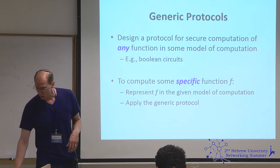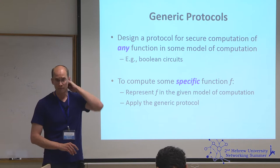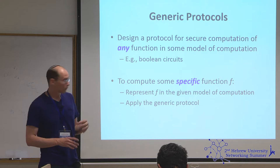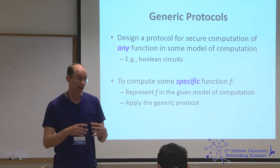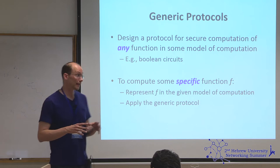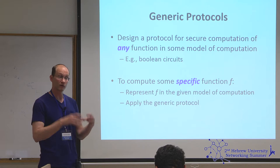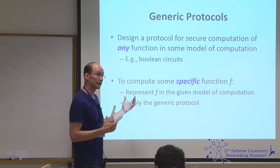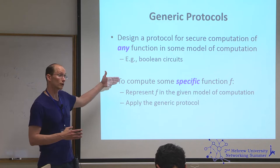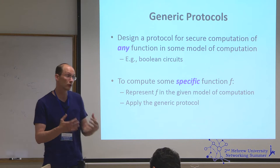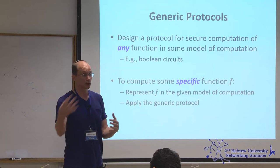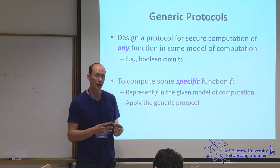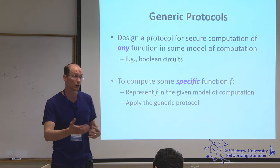Let me define what I mean by a generic protocol. These feasibility results show how to take any boolean circuit and come up with a secure protocol computing it. So from a feasibility point of view, for any particular function of interest, all you need to do is take your function f represented as a boolean circuit and apply the generic result. Any efficiency improvements in the protocols for going from a boolean circuit to a protocol — call it a compiler — will automatically translate to any particular function f of interest that you want to securely compute.